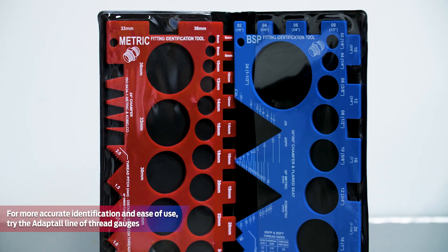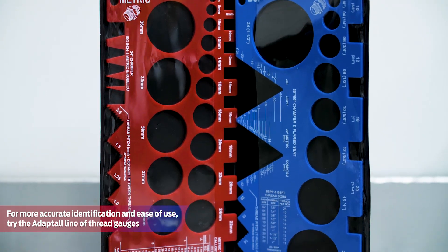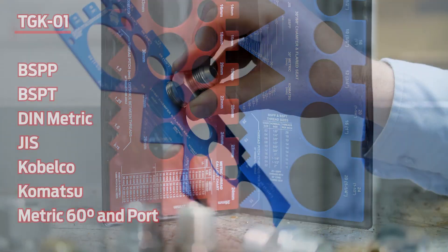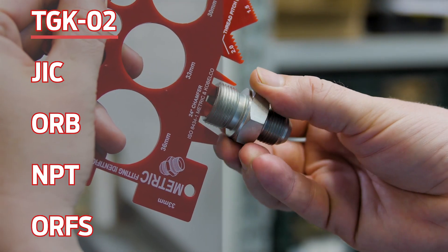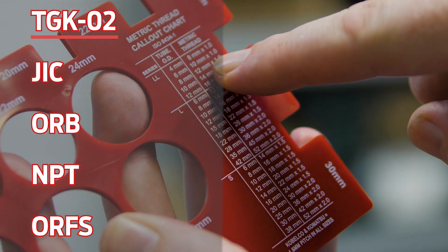To simplify the entire process, try out Adaptal's line of TGKs or thread gauge kits. Available for not only British and metric threads, but also JIC, O-Ring Boss, NPT, and O-Ring Face Seal, these gauges walk you through the required steps and provide a simple, accurate, and convenient approach to hydraulic thread identification.